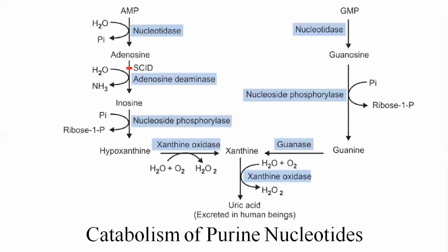This is how the catabolism of purines takes place. In this lecture, we covered how the catabolism of the purine nucleotide — specifically the adenine nucleotide — is oxidized by the body, with uric acid as the final oxidation product. The five step reactions begin with: first, dephosphorylation carried out by nucleotidase; then, deamination carried out by adenosine deaminase.